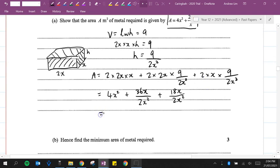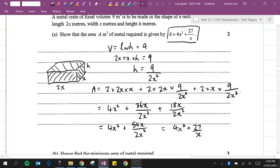Okay, keep going. 4x squared plus 36 plus 18, that's 54x over 2x squared, because they both have the same denominator. And that equals 4x squared plus 27 over x, which is what the question asked us to show.